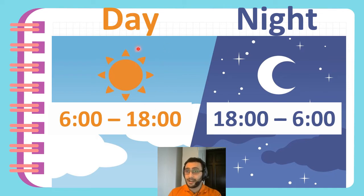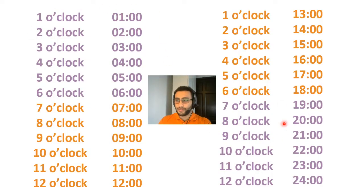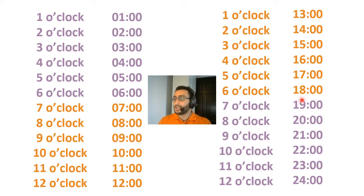Daytime and nighttime: daytime starts from 6 until 18, and nighttime is 18 until 6. So 6 until 18 is daytime because the sun is out, and nighttime is 18 until 6. From 7 o'clock in the evening until 6 o'clock in the morning it's nighttime because there is no sun, and from 6 until around 18 it is daytime because we can see the sun.